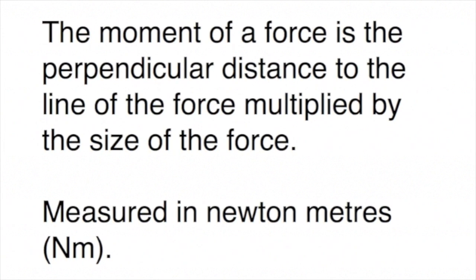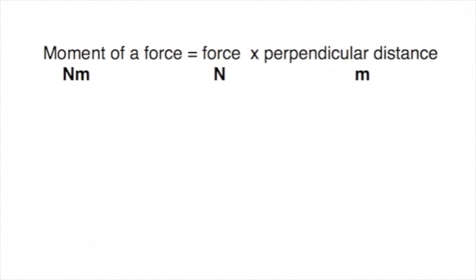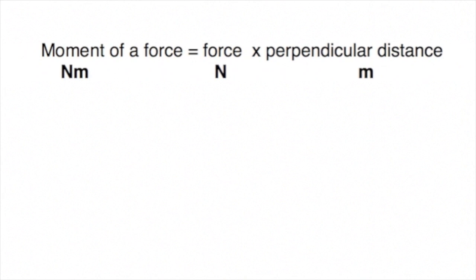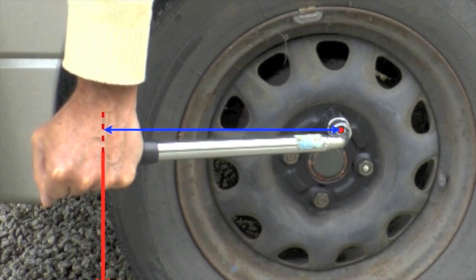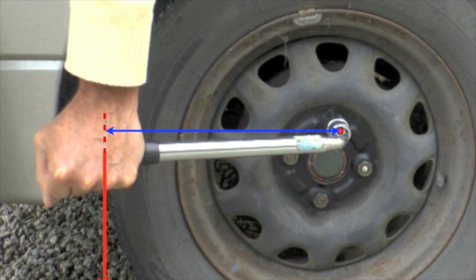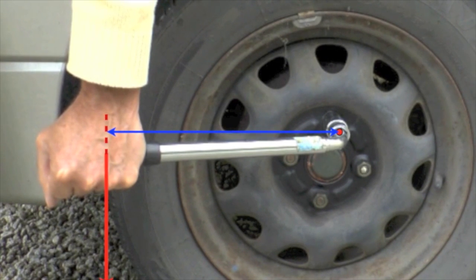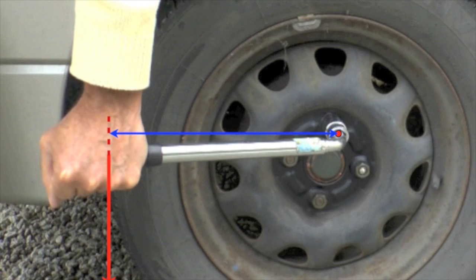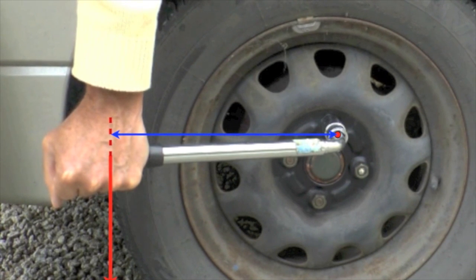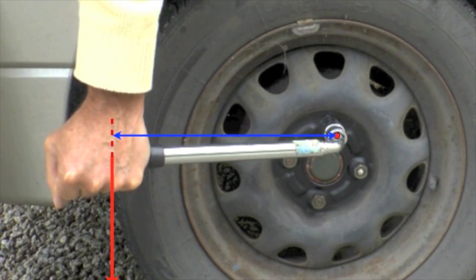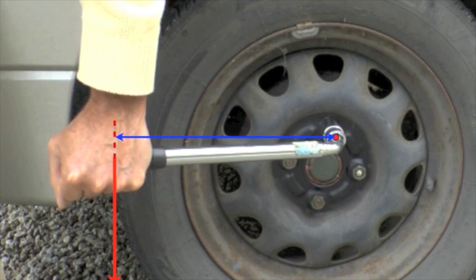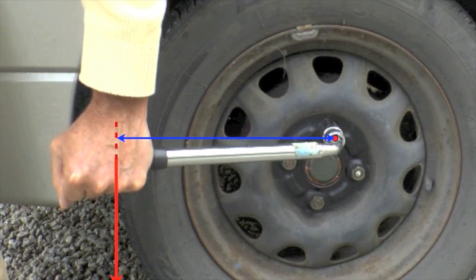Force is measured in newtons and the distance in metres, so the moment is measured in newton metres. In the example we've already seen, if the force was 100 newtons and the distance from the hand to the centre is a quarter of a metre, the moment would be 100 multiplied by 0.25, which would be 25 newton metres.